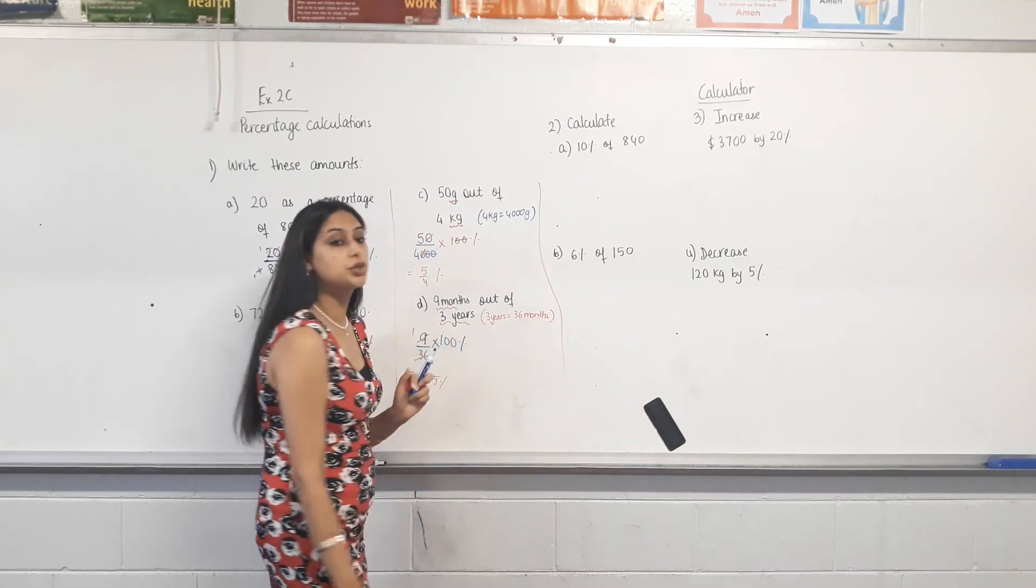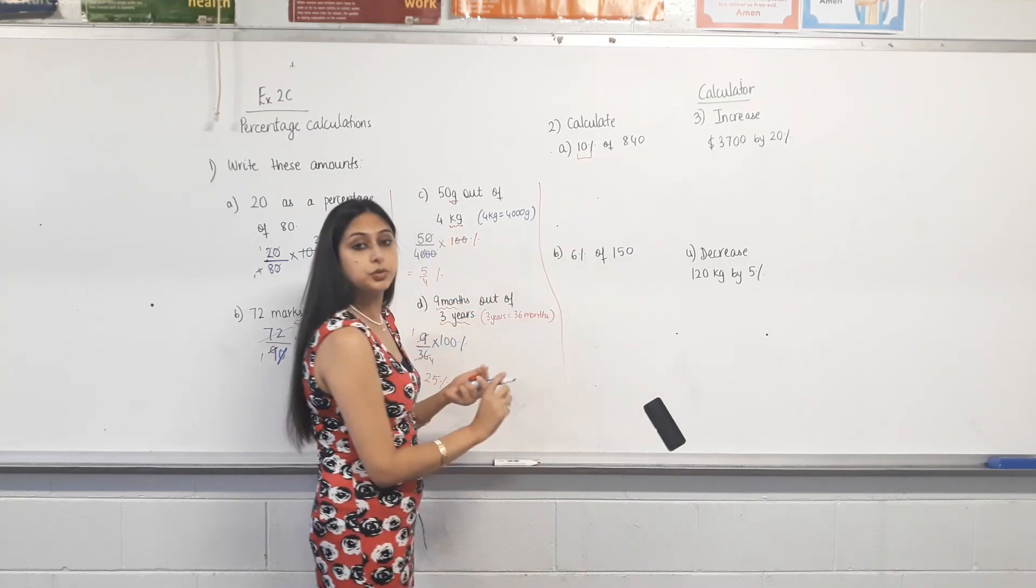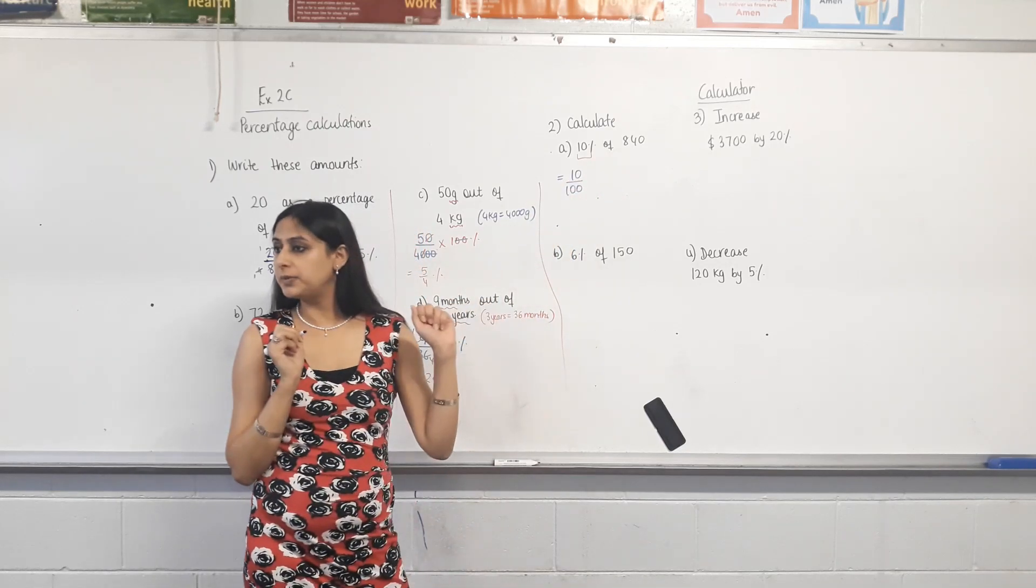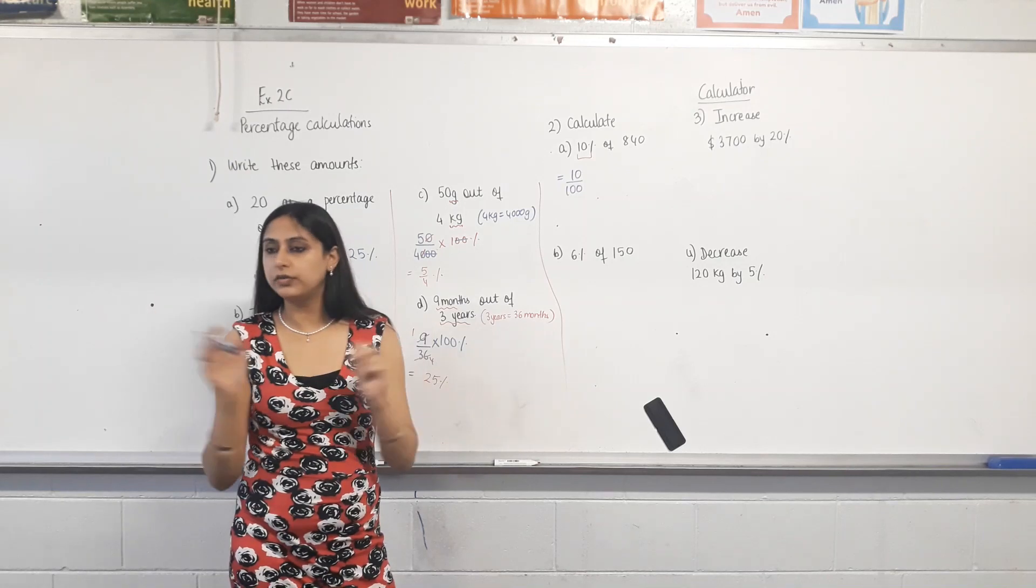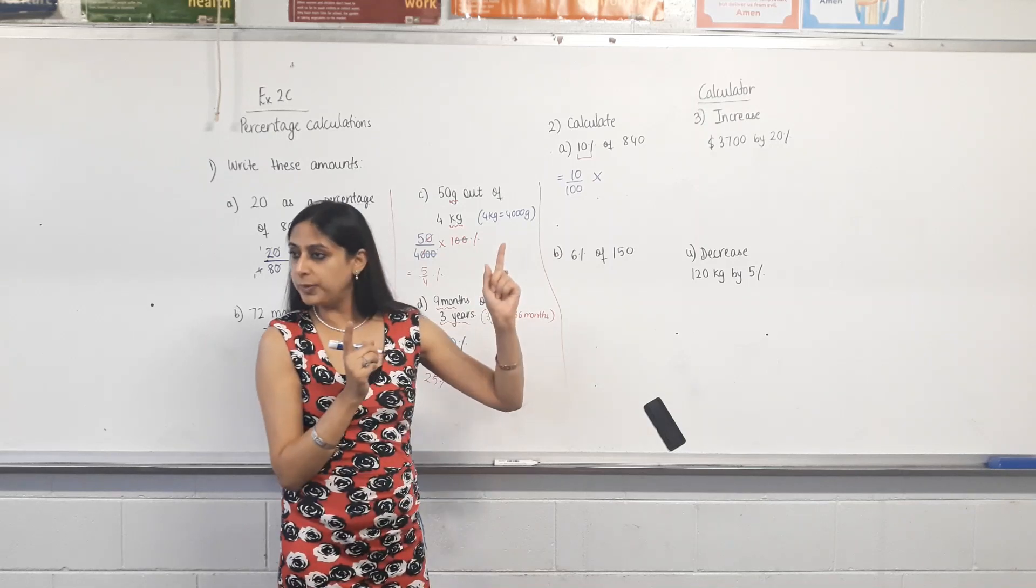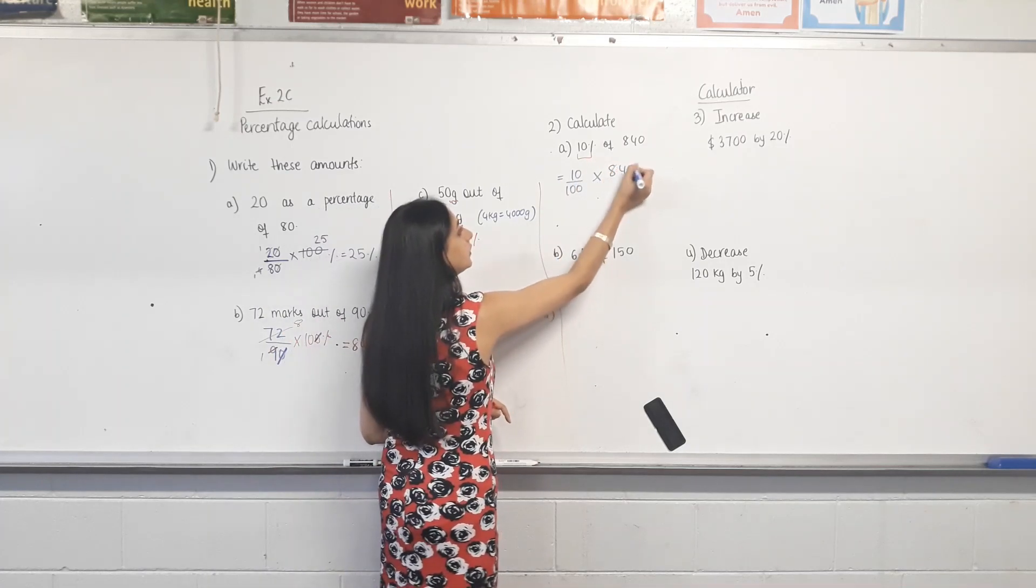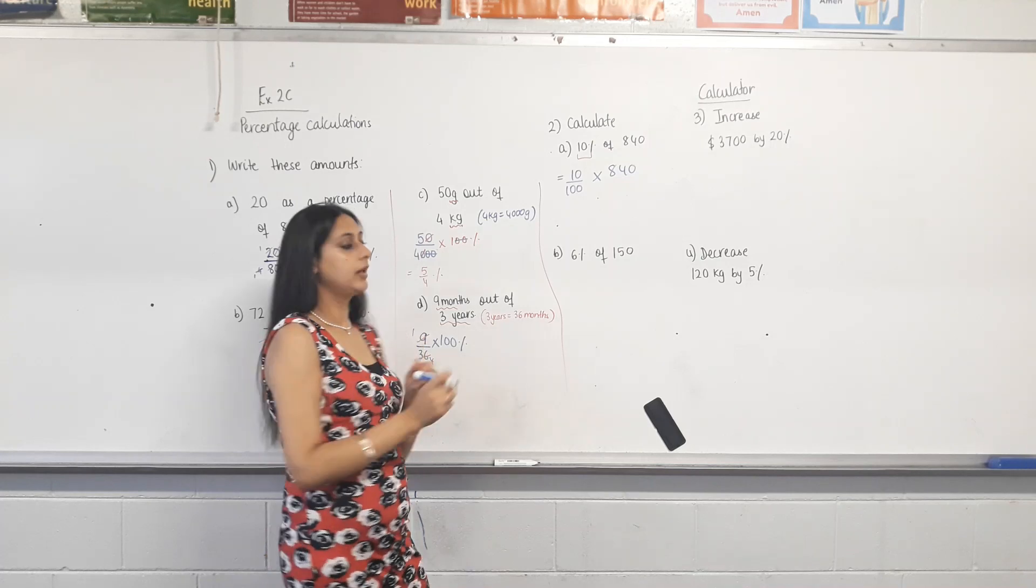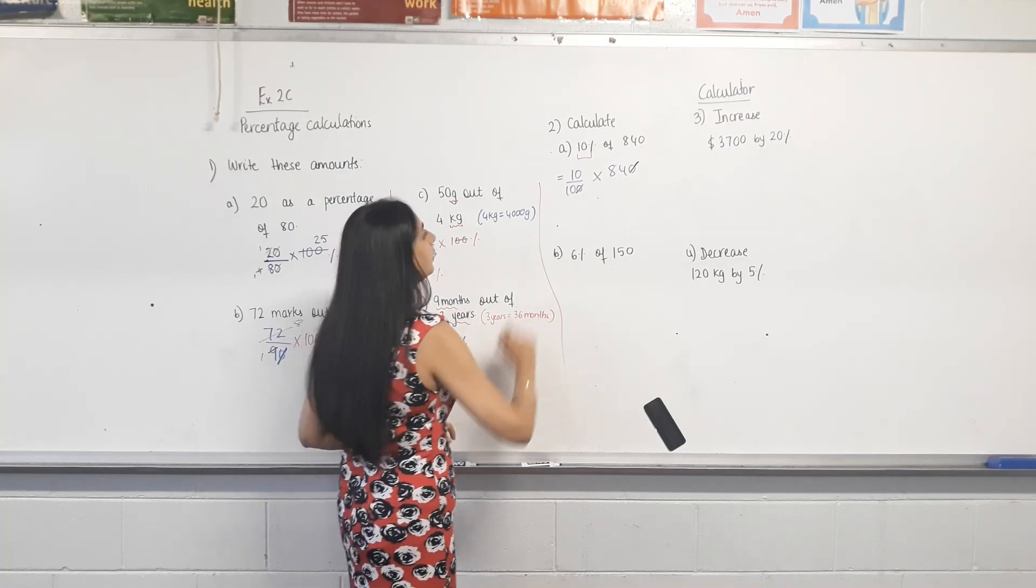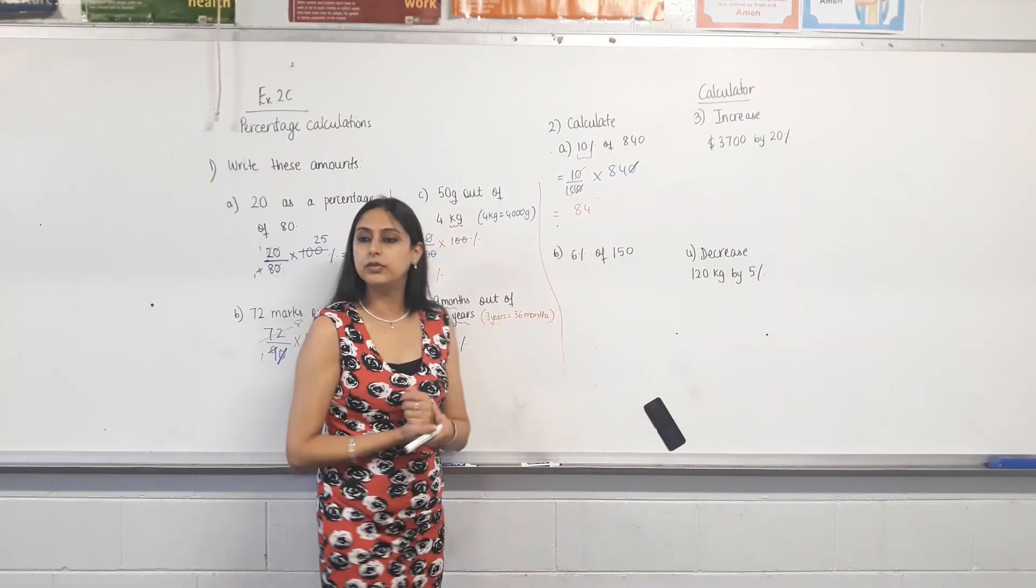Now, finding a percentage of an amount. 10% of 840. First of all, converting the percentage into a fraction. If I want to get rid of the percentage sign, I need to divide it by 100. So, can 10% be written as 10 over 100? Yes. So, I've got rid of the percent sign. Now, off. Off means times. So, get rid of the percent sign by putting it over 100. Replace the off by times, and then that's your answer. That'll be 10% of 840. Now, simplifying. Can we divide both of these by 10? Yes. Can we divide these by 10? Yes. What are we left with? 1 times 84? 84. Okay.